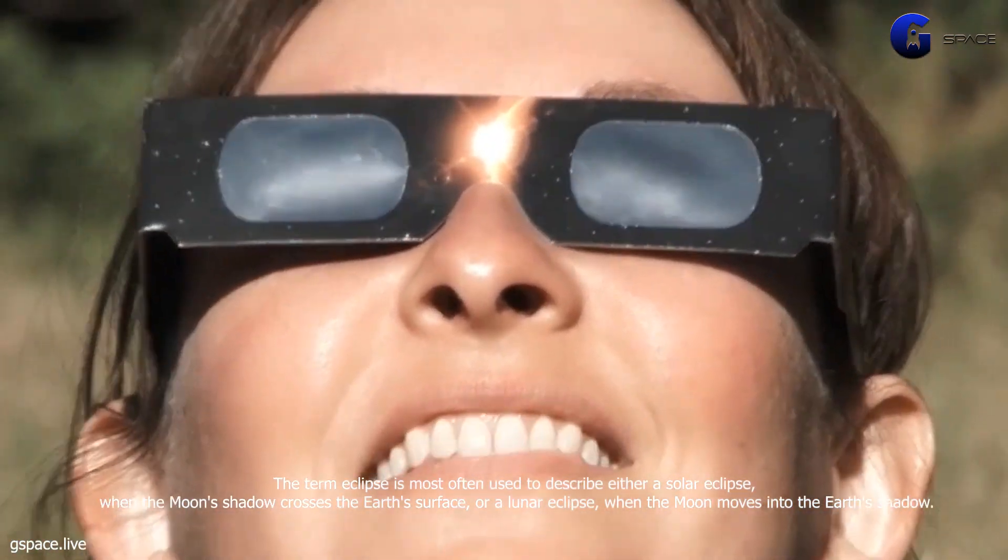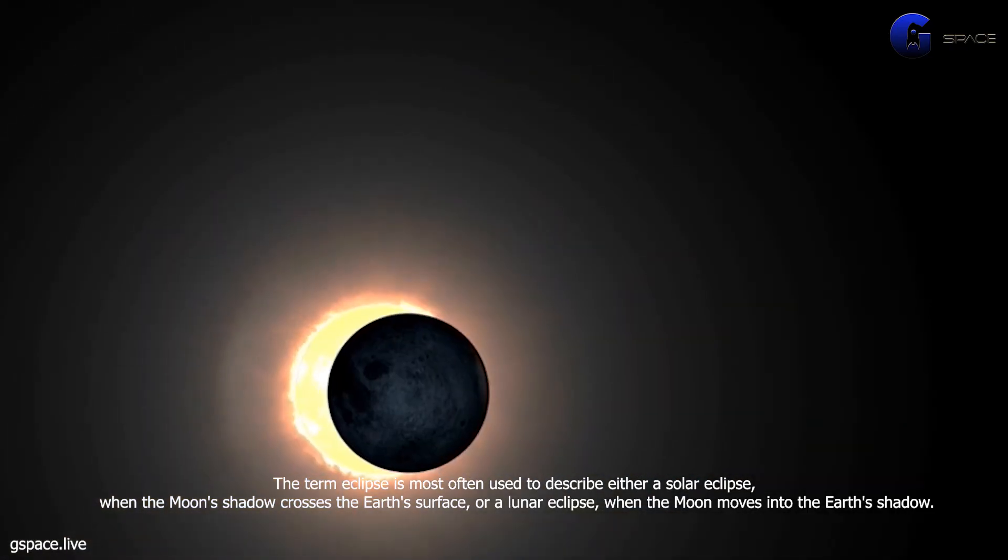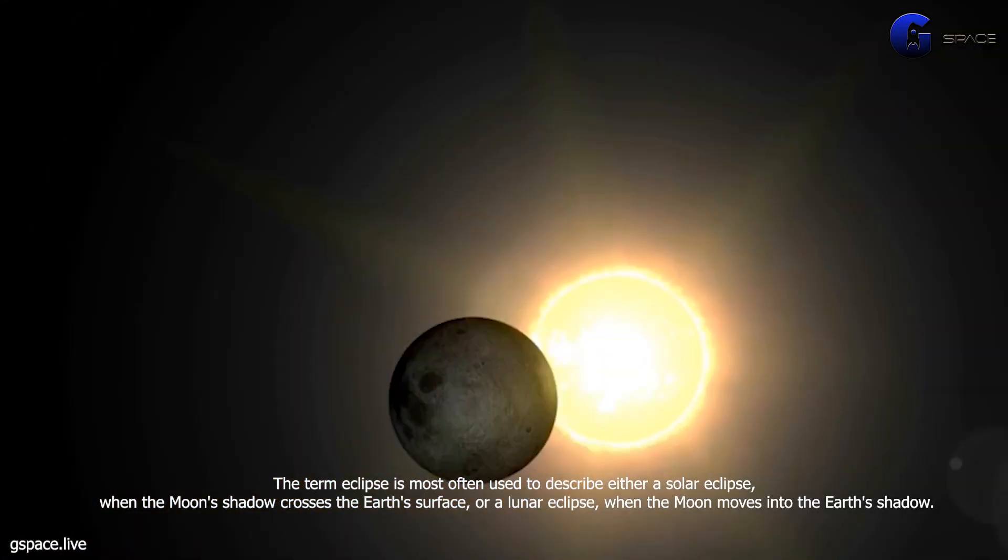The term eclipse is most often used to describe either a solar eclipse, when the moon's shadow crosses the earth's surface, or a lunar eclipse, when the moon moves into the earth's shadow.